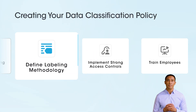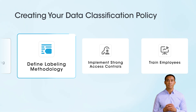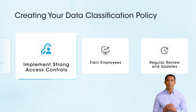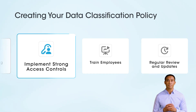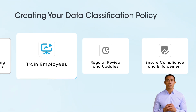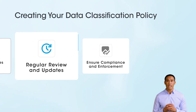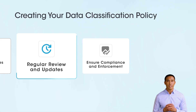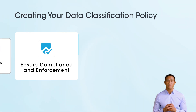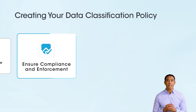Establish consistent labeling methods for classified data, enabling automated enforcement of security controls and easy identification of data sensitivity. Implement role-based access controls (RBAC) and multi-factor authentication to restrict data access based on classification and enhance security. Outline training requirements for all employees, including initial and ongoing programs, to ensure understanding and adherence to data classification policies. Set procedures for periodic reviews and updates to classifications, maintaining relevance and effectiveness as business needs and regulations evolve. Include audit and compliance measures, along with incident response procedures, to monitor effectiveness, demonstrate compliance, and respond to data security incidents.